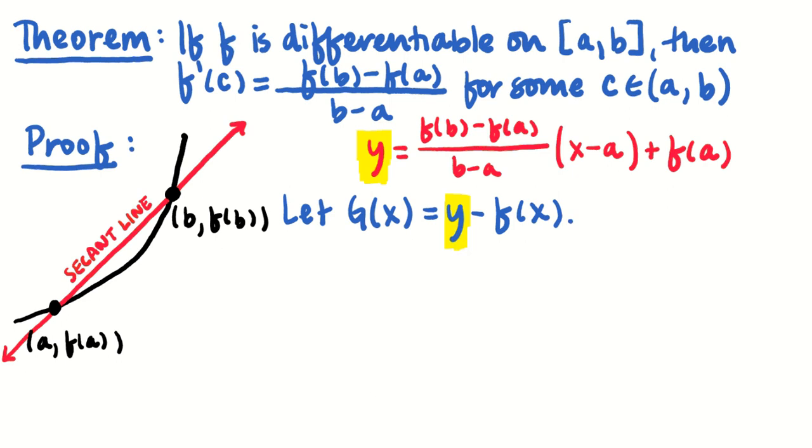Now, I'm going to say a few things about g. I think it's, right here, maybe I'll just say g is that vertical distance here or here or here. It's pretty plain to see that g(a) is equal to zero and that g(b) is equal to zero.